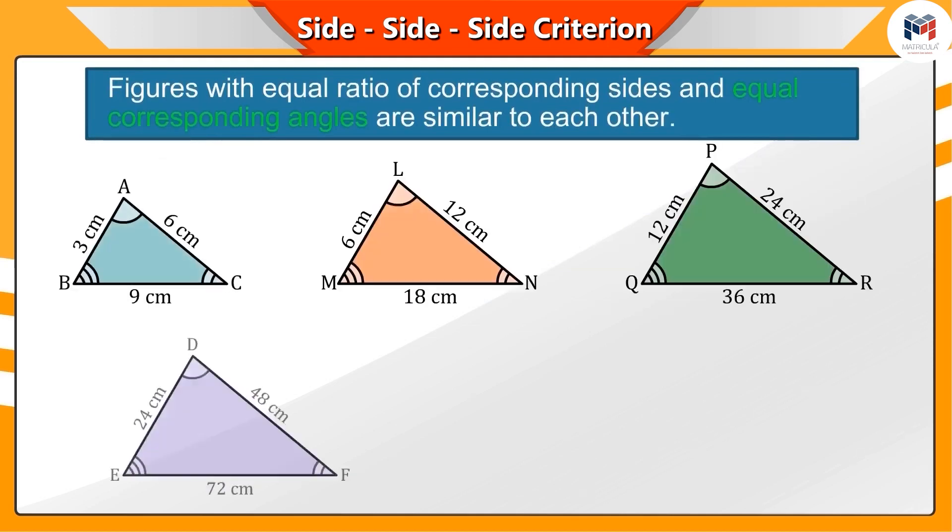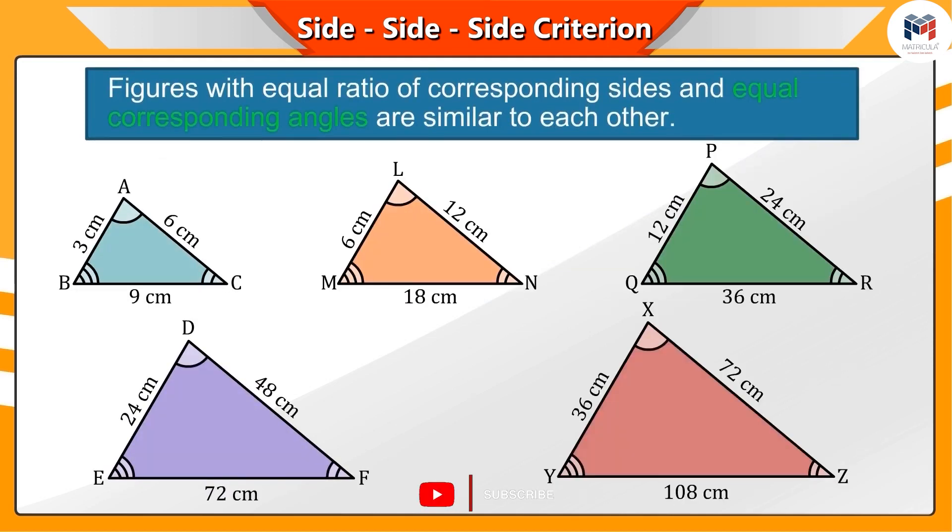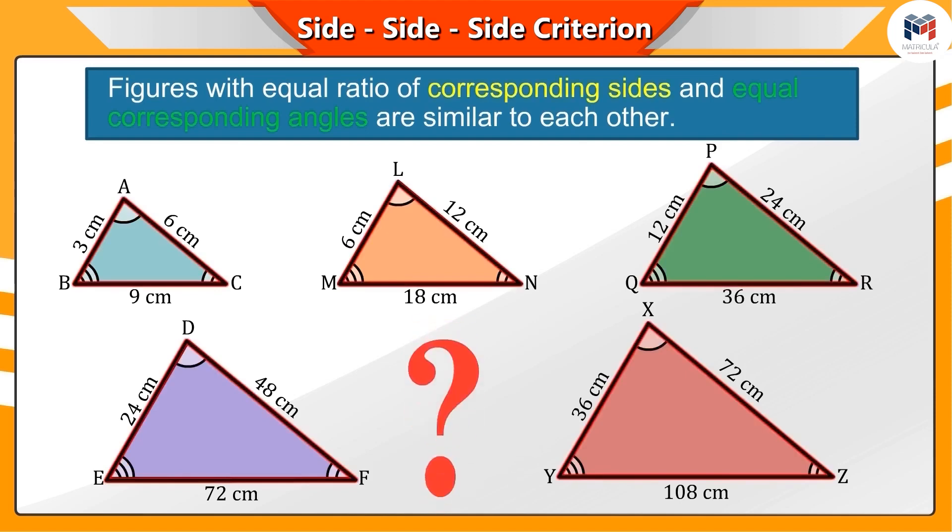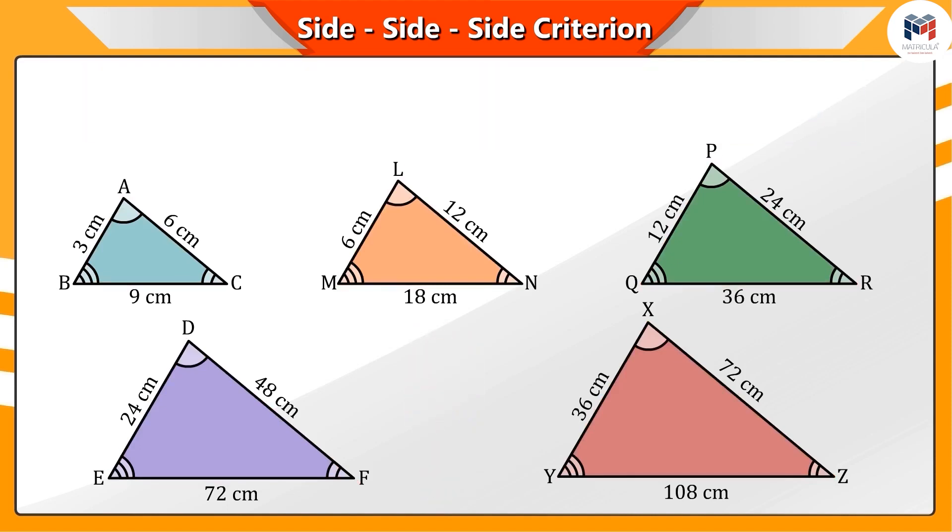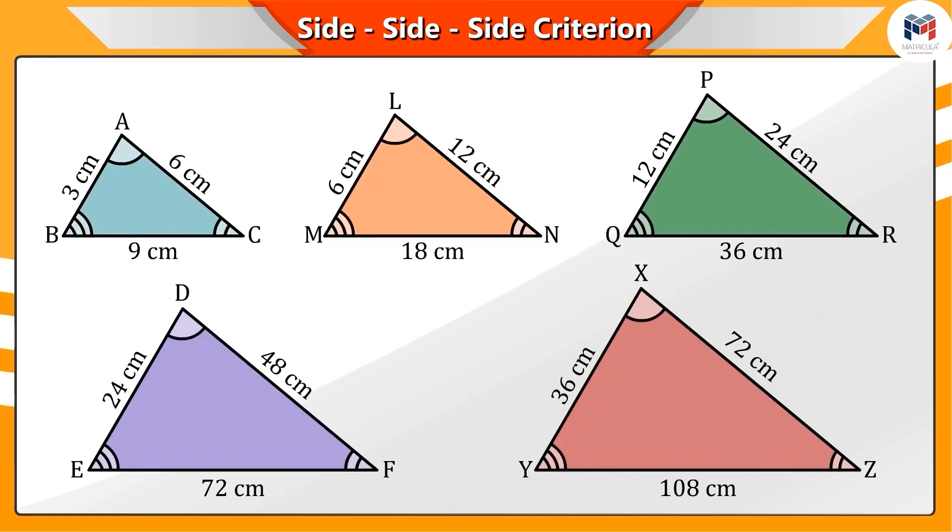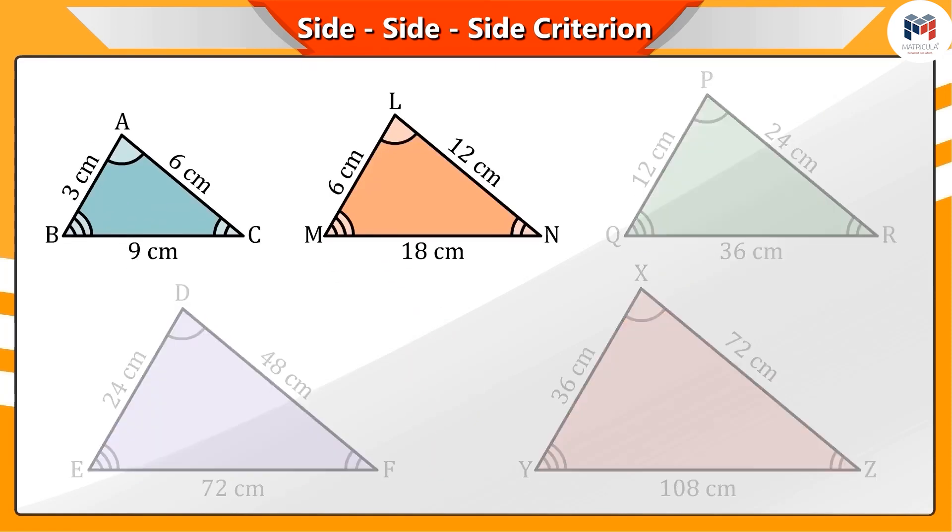You are given some triangles here. Are all the corresponding angles of these triangles equal? And what do you understand by the corresponding sides of these triangles? To understand this, we will take triangles ABC and LMN.